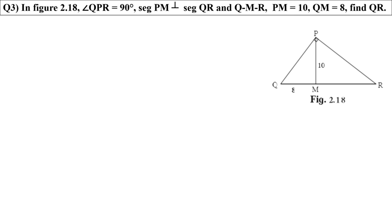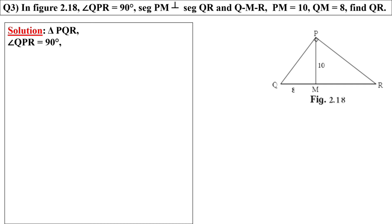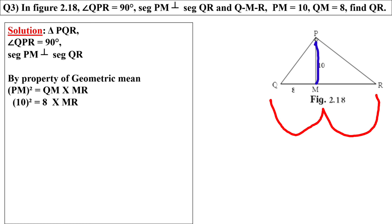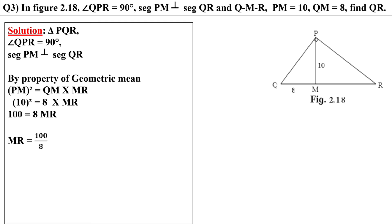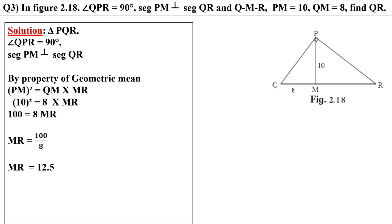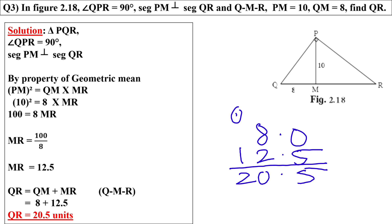Question number 3. In figure 2.18, angle QPR equal to 90 degree, PM is perpendicular to QR and Q, M, R are collinear. PM is given 10 and QM is given 8. We have to find QR. Before finding QR, first we have to find MR. Here also we are going to use geometrical mean. Triangle PQR, angle P is 90 degree and PM is perpendicular to QR. By using the property of geometrical mean: square of PM equal to QM into MR. PM value is 10, QM is given 8, MR we have to find. Square of 10 is 100 equal to 8 multiplied by MR. 100 divided by 8, so we get 12.5. QR equals QM plus MR because they are collinear. So QM is 8 and MR is 12.5; the addition gives us 20.5. So our answer is 20.5.